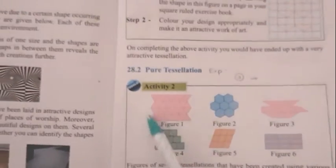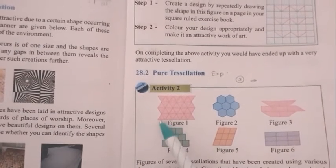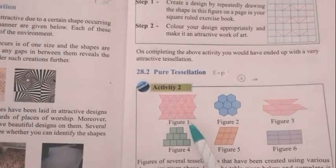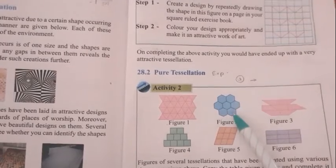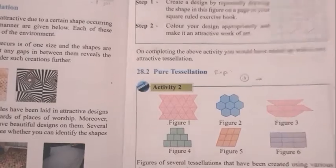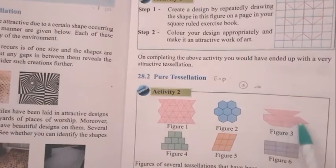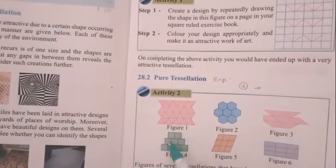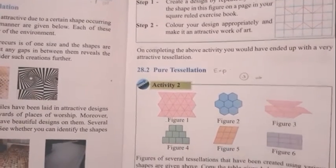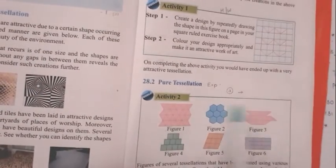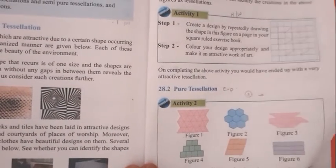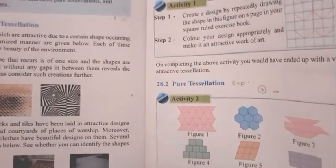Now you know what Tessellation is. I am going to explain Pure Tessellation. Tessellation that is done using just one shape is called Pure Tessellation — only one shape. Observe the figures: figure 1 uses only triangles, figure 2 uses only hexagons, and figures 3, 4, 5, and 6 each use only one shape. All of these are Pure Tessellations. How do you identify them? Because they have used only one shape.